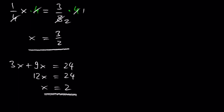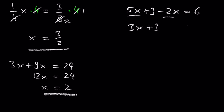What about 5x plus 3 minus 2x is equal to 6? Combining like terms: 5x minus 2x is 3x, so 3x plus 3 is equal to 6. Subtracting 3 on both sides gives 3x is equal to 3. Dividing by 3 on both sides gives x is equal to 1.